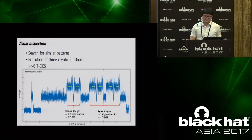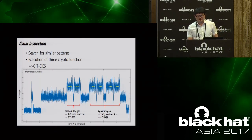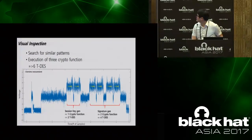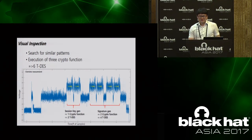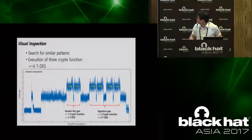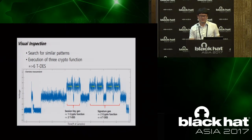Now about the experiments. From the collected traces, we searched for similar patterns and guessed where the triple-DES operates. This figure captures six triple-DES operations. As you can see, six similar patterns appear. This part is related to session key generation, and this part on the right is related to signature generation in the recharging protocol. For session key generation, triple-DES is operated twice, and for generation of the signature, triple-DES is operated four times. Our target is the first triple-DES.